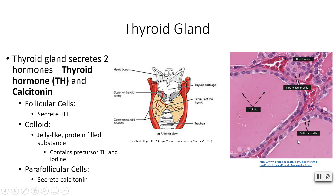The follicular cells secrete thyroid hormone. Within the follicular cells, they create distinct sections that encapsulate the colloid, which is a jelly-like substance full of proteins. It contains the precursor for thyroid hormone and also contains iodine. In addition to these follicular cell regions, you have parafollicular cells, which secrete calcitonin.